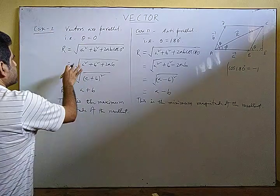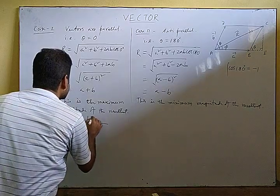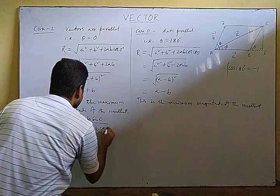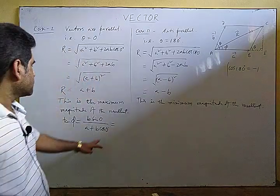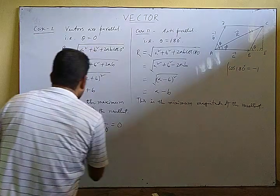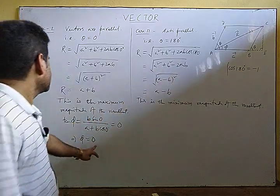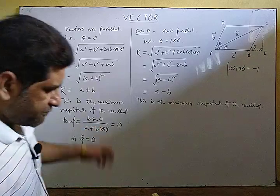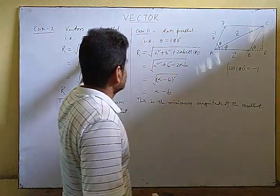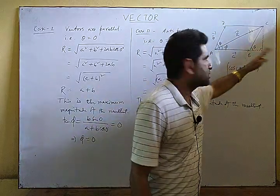For direction in Case 1 (θ = 0°): tan φ = B sin 0° / (A + B cos 0°) = 0 / (A + B) = 0, so φ = 0°. Similarly for Case 2 (θ = 180°): tan φ = B sin 180° / (A + B cos 180°) = 0 / (A − B) = 0, so φ = 0°. In both cases, the resultant acts along the direction of vector A.